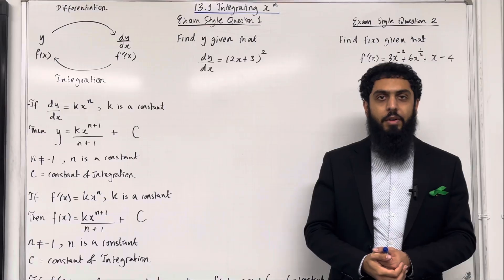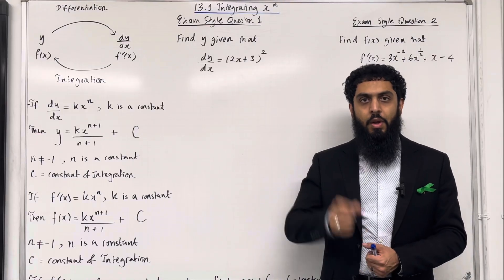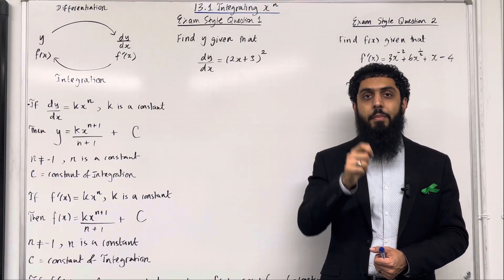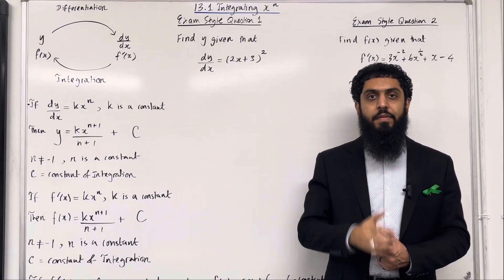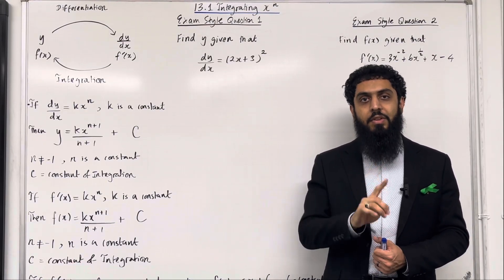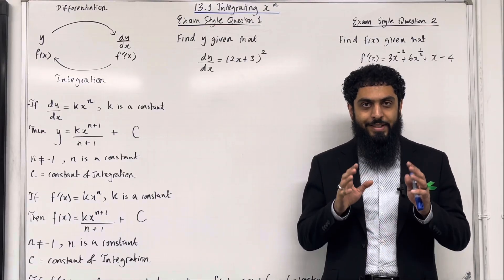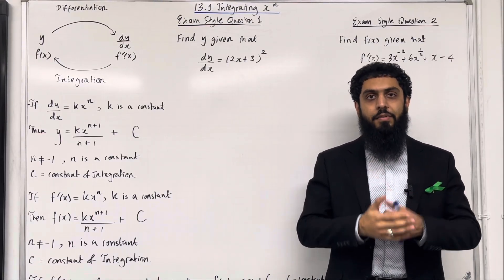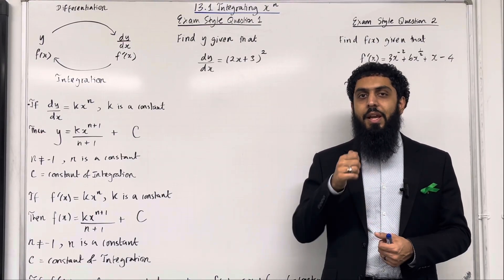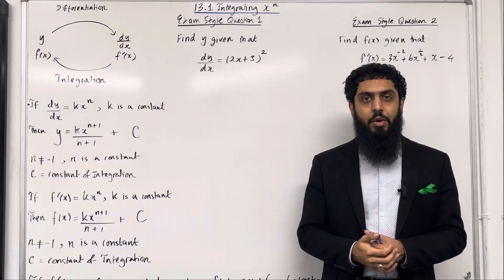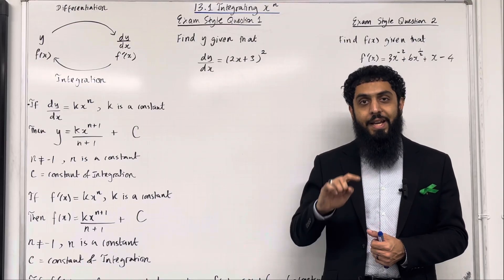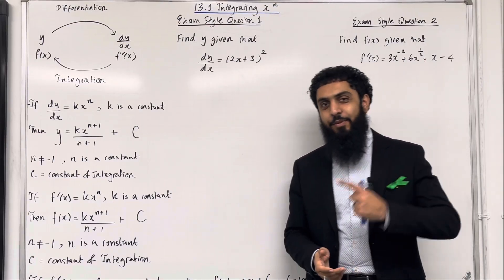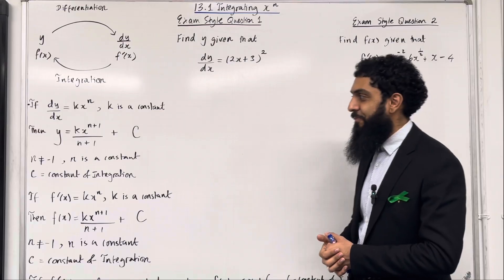How do we differentiate polynomials? Basically, you bring down the power n and multiply by the coefficient, then subtract 1 from the power. Since integration is the reverse of differentiation, integrating polynomials involves adding 1 to the power, then dividing by the new power. Let's formalize this.